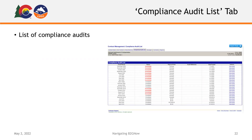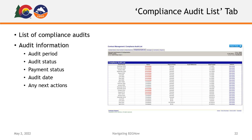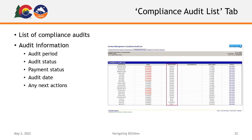The next tab is your Compliance Audit List tab, where you will find a complete list of any compliance audits applied to the project. Here, you will find all the associated audit information including the audit period, the status of the audit, the status of any payments, the date the audit was posted, and whether there are any further actions needing your attention.